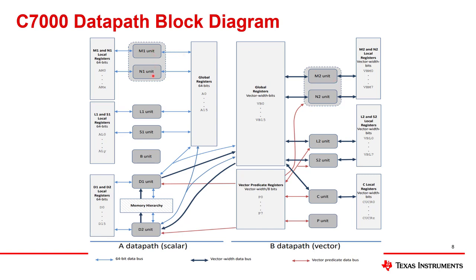Looking at units unique to the B side: the C unit is the one that can do operations inside a vector, like vector permutation and horizontal add. The P unit is the one used for turning on and off parts of a vector — predicating the vector.